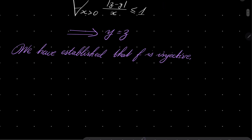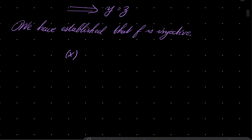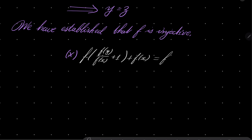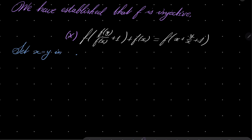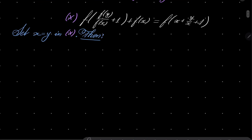Now let's recall our functional equation and set x = y in condition asterisk. Then on the left-hand side we have f(something) + f(x) = f(x + 2), giving us the relation f(t + 2) = f(t) + f(2) — let's call this condition square.